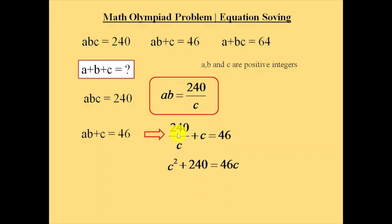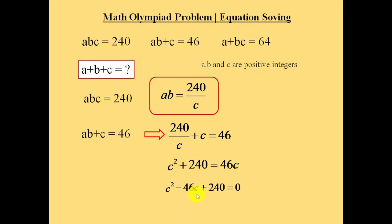That will be equal to c squared plus 240 is equal to 46c. Bringing 46c to the left side, which will become c squared minus 46c plus 240 is equal to 0.